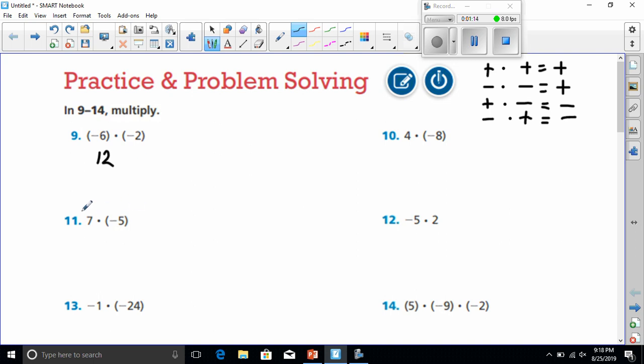All right, next we have 11. That's 7 times a negative 5. Well, that's a positive number times a negative number. Positive times a negative equals a negative answer. And 7 times 5 equals 35. So our answer is negative 35.